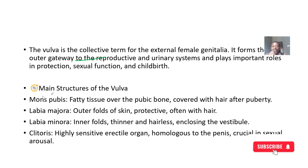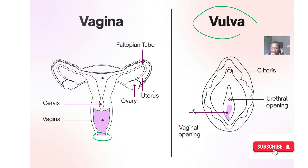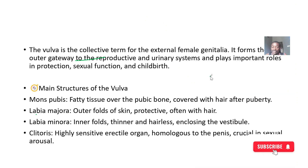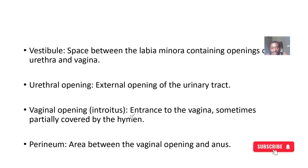The structures that make up the vulva include the mons pubis, the labia majora, the labia minora — the inner one is the minora and the outer one is the majora — and then we have the clitoris, which contains a high concentration of nerve endings, making it highly sensitive. It is an erectile organ, homologous to the penis.